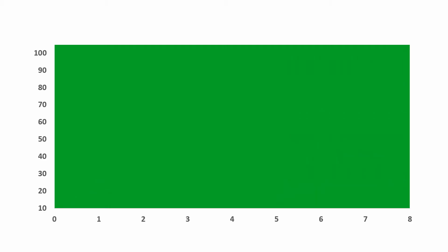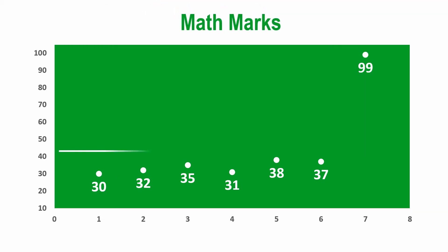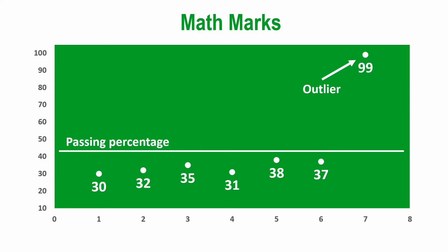This is obtained by dividing 302, the sum of all the marks, by the number of students. Obviously, all except one student have scored below 40, which is the passing percentage, and they seem to be having a tough time in class. If the teacher used this average of 43 to describe the class performance, she would be overestimating it. There is one number — 99 — that is polarized to one extreme. The data is not evenly distributed, or skewed.